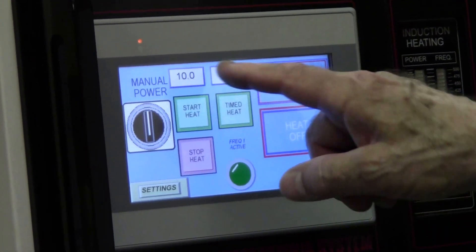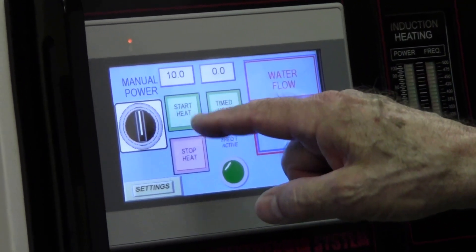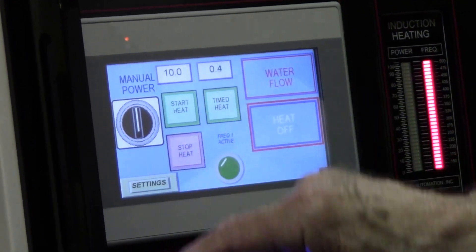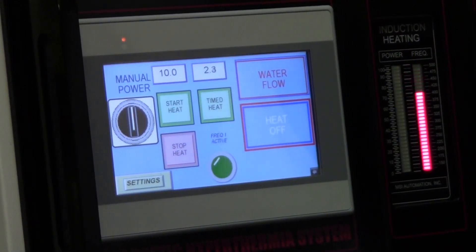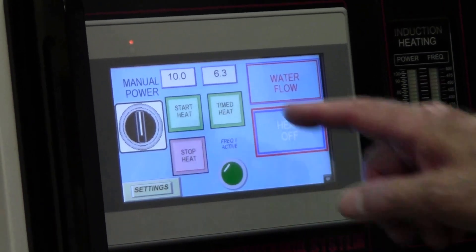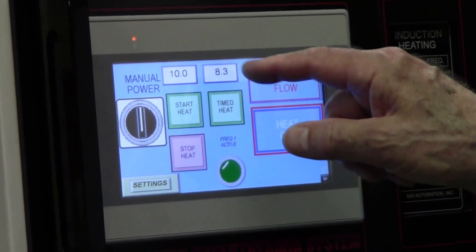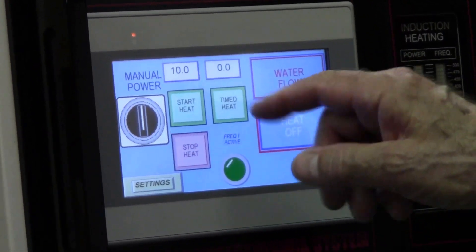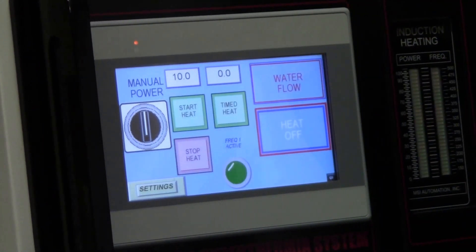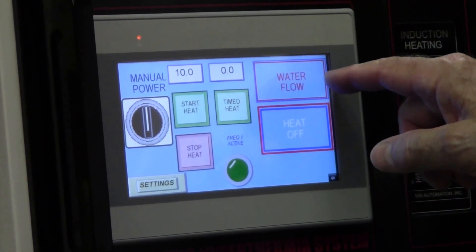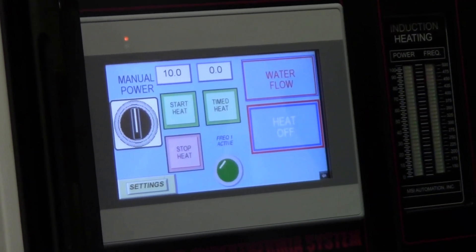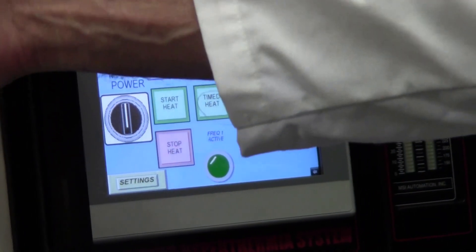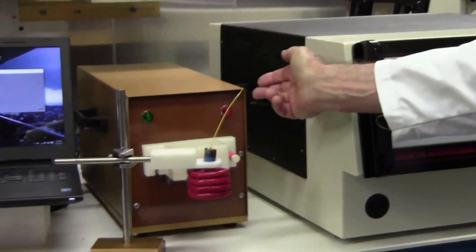And then if you want to use the timer, instead of pressing start heat, you would press timed heat. Right now we're not heating, we're just demonstrating. Six seconds, seven seconds, eight seconds, nine seconds, and now it's off. If you look in the right hand corner, it says water flow, which means we don't have water pressure.